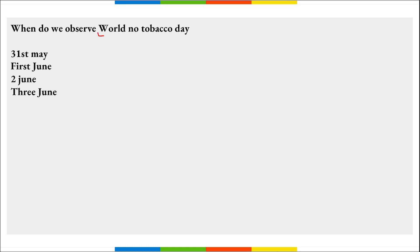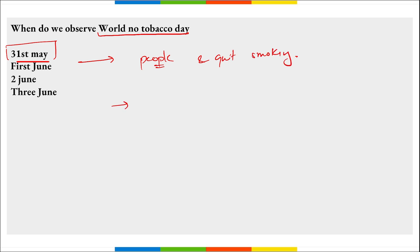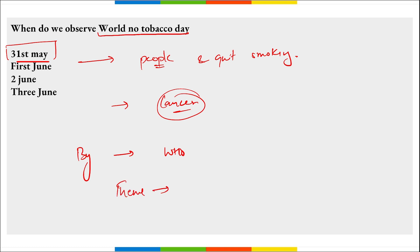When do we observe World No Tobacco Day? It is observed on 31st of May to create awareness about the harmful effects of tobacco consumption and to encourage people to stop using tobacco and quit smoking. Various diseases such as cancer can be caused by tobacco consumption. This day is observed by the WHO — World Health Organization. The theme for this day is 'We Need Food, Not Tobacco.'